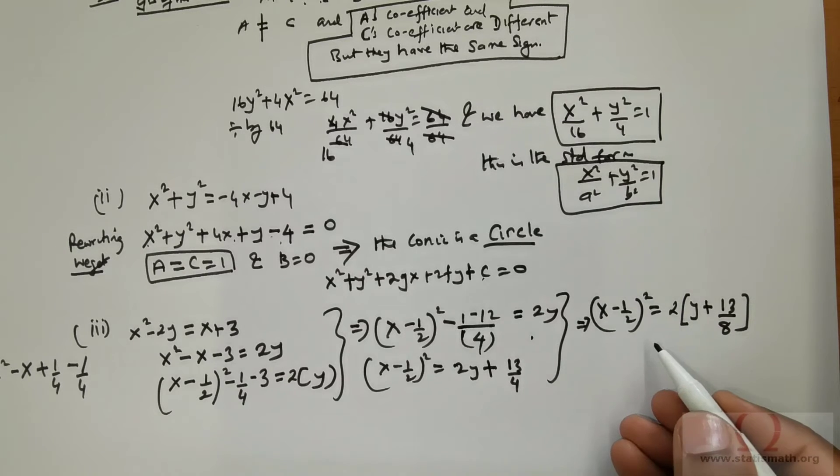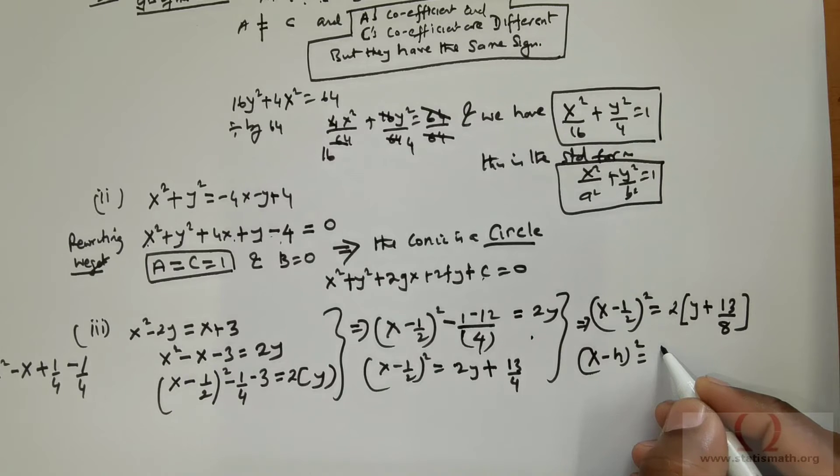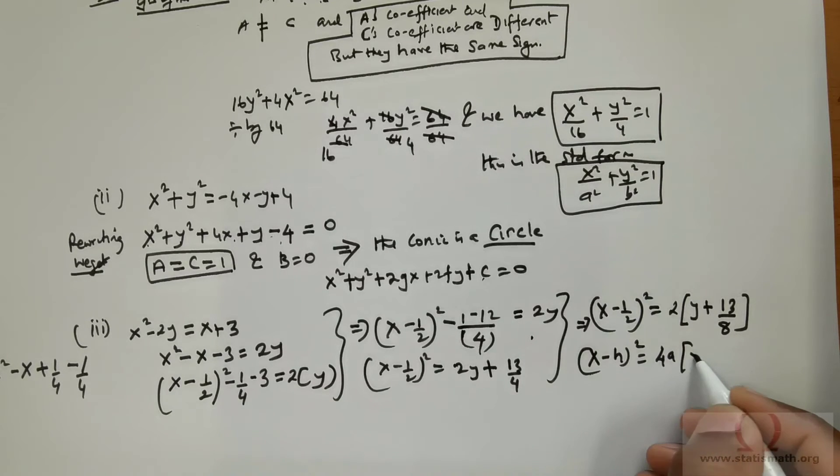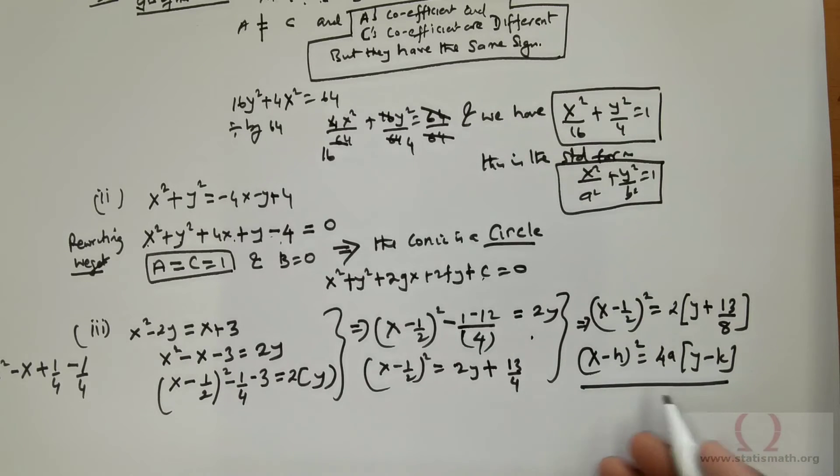So this is typically the equation of parabola. Because we have studied x negative h raised to the power 2, all squared is equal to some constant times, it can be 4a times y negative k. So this is the form of a parabola, which we have all studied.